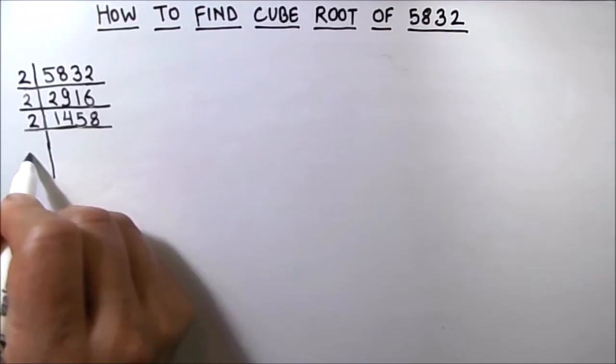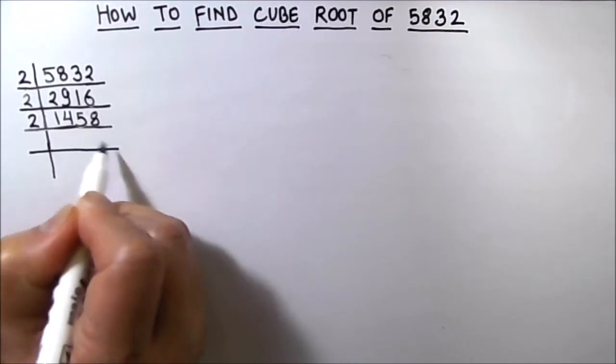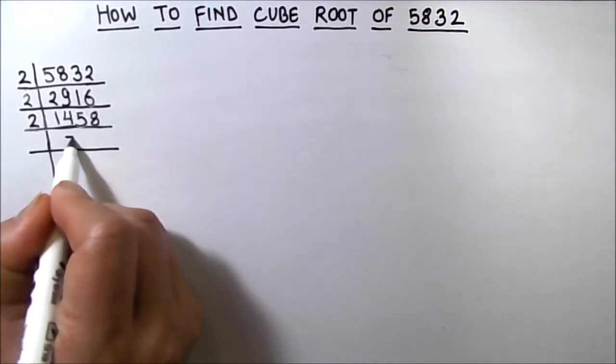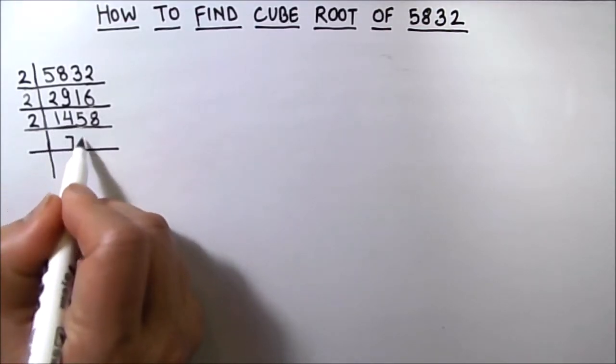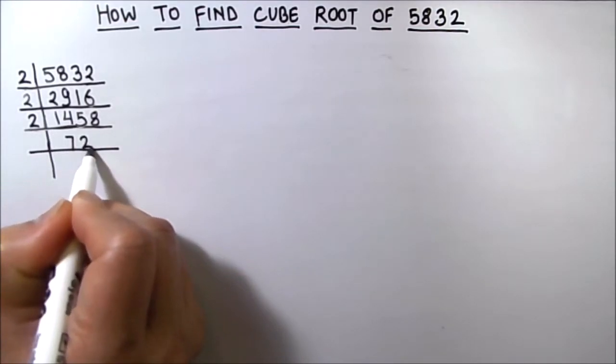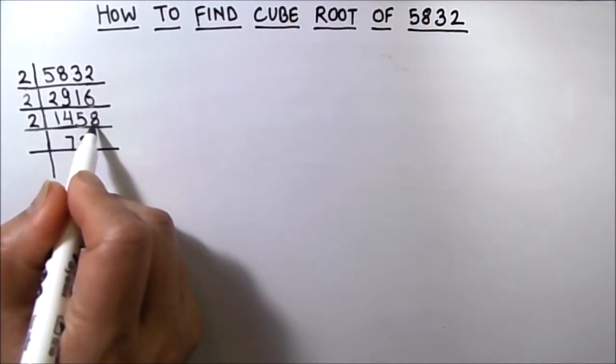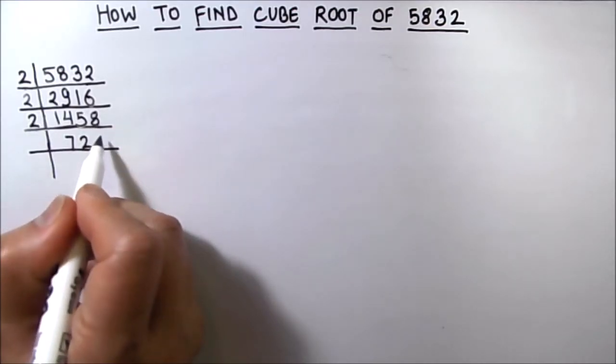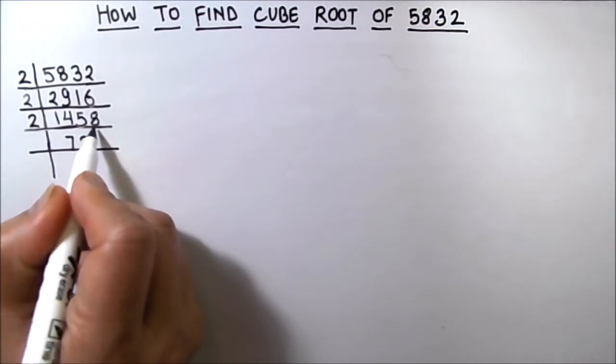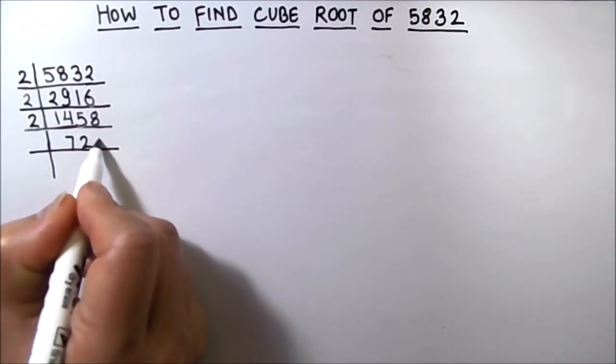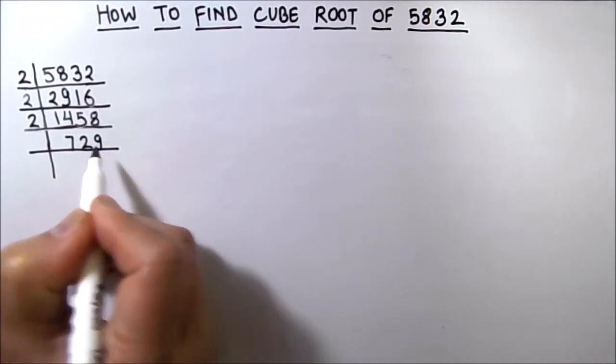So let's divide it by 2. So 2 times 7 is 14, 2 times 2 is 4, 1 is carried over to the next digit, this becomes 18, so 2 times 9 is 18.